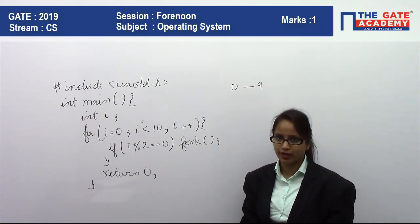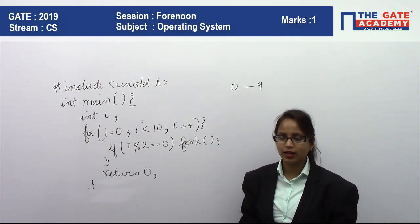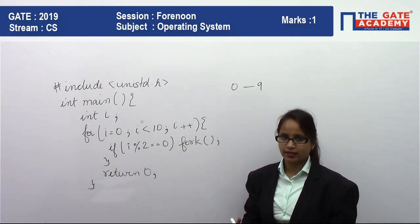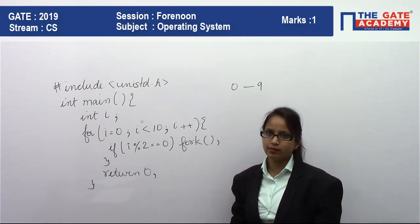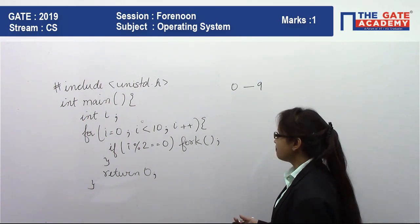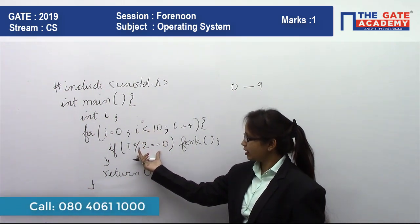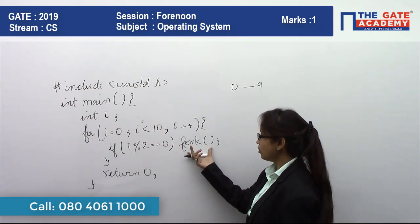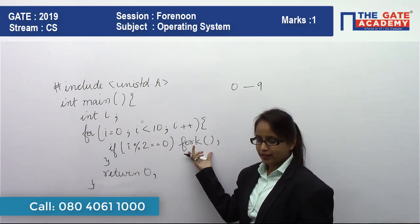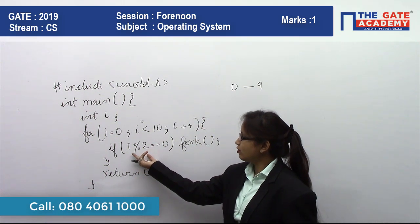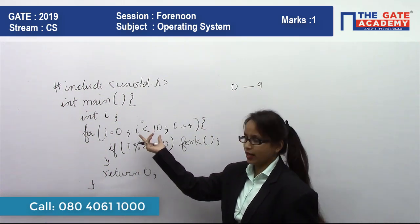For each and every parent, the number of children will be created the same. So we'll see here: first one is saying that this loop will run from 0 to 9, and if this condition is satisfied, then only your fork will be executed. If you see, this one will be satisfied for all the even numbers in this range.